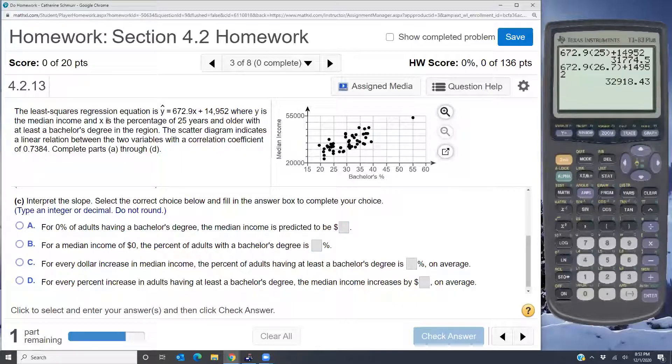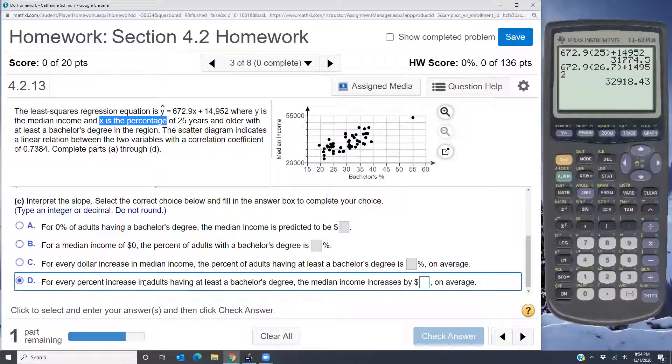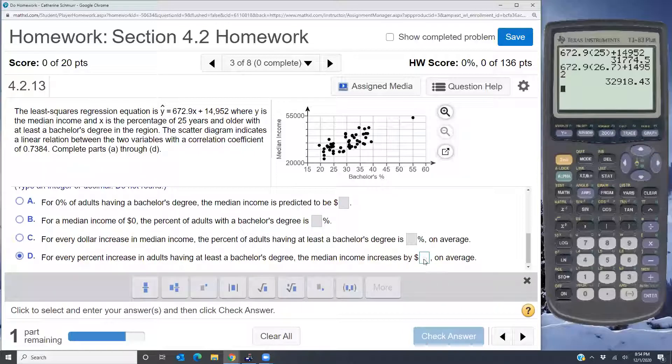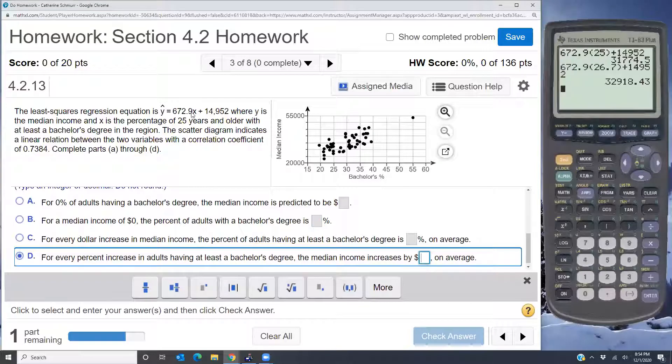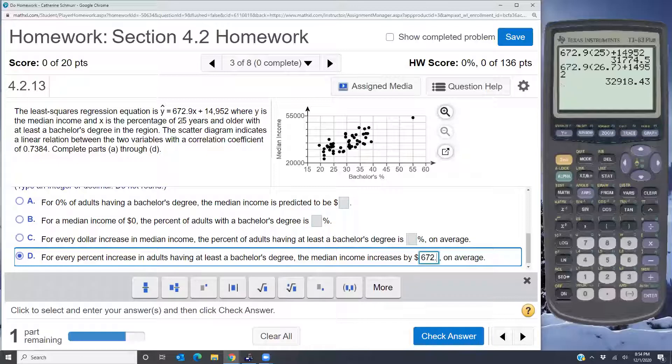So in other words, every time the percentage increases by 1, the median income goes up by 672.9. So I want to look for the one that talks about the percent increasing by 1. So this one says for every percent increase in adults having at least a bachelor's degree, the median income increases, and we can say increases because the slope is positive, so it also increases by 672.9 dollars.